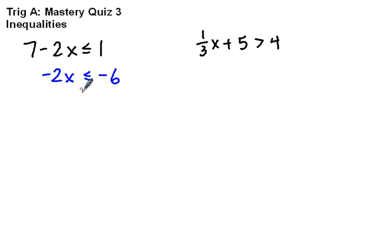Then the next thing we're going to do is divide by negative 2, and here is where we have our first warning.